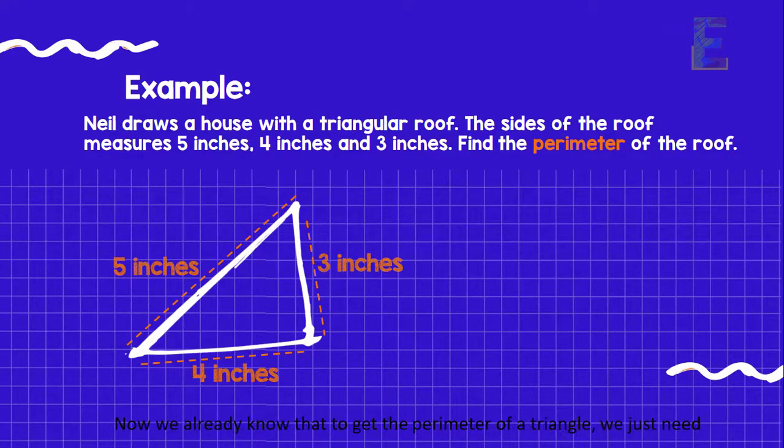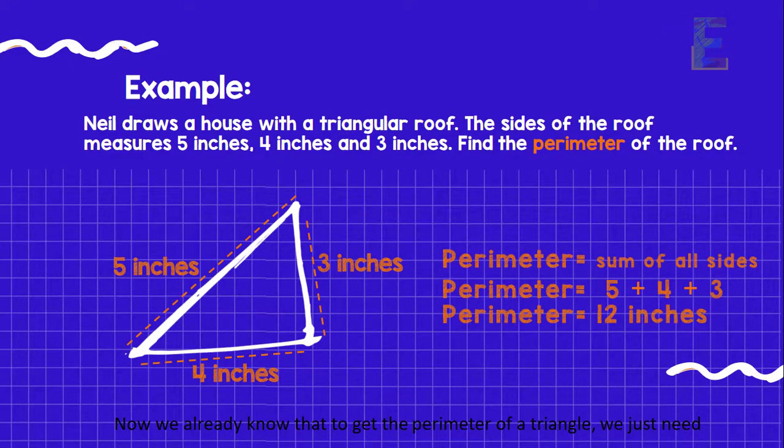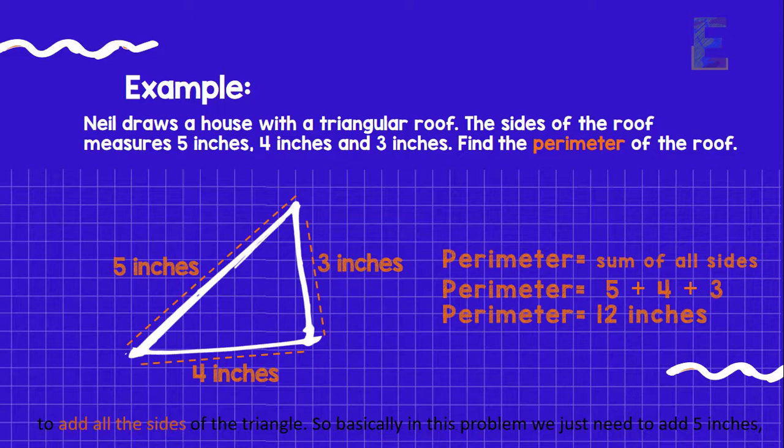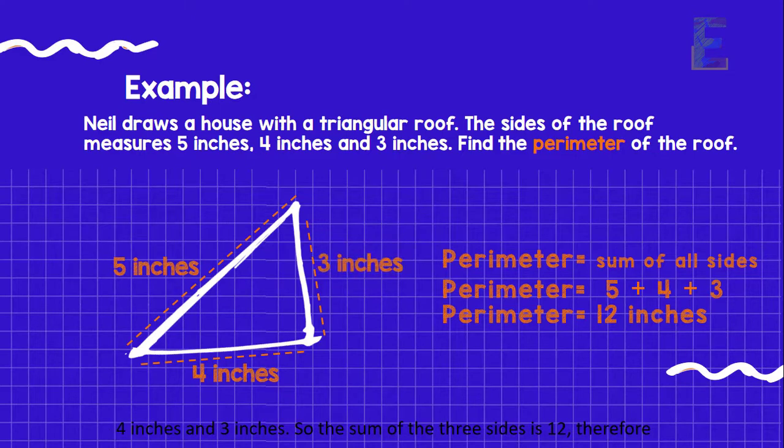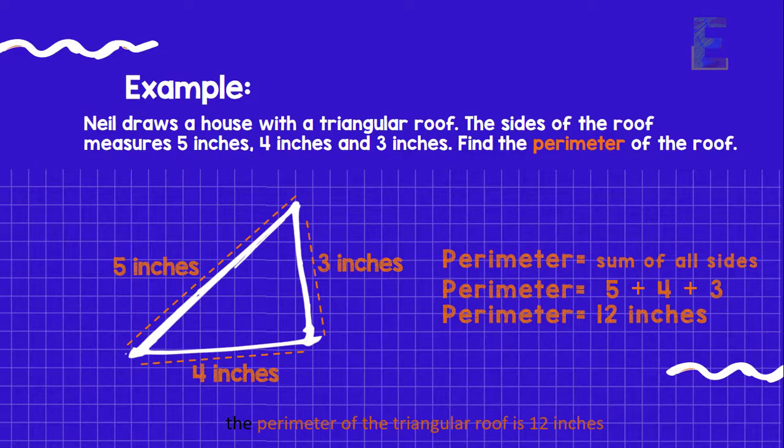Now we already know that to get the perimeter of a triangle, we just need to add all the sides of the triangle. So basically in this problem, we just need to add 5 inches, 4 inches, and 3 inches. So the sum of the 3 sides is 12. Therefore, the perimeter of the triangle roof is 12 inches.